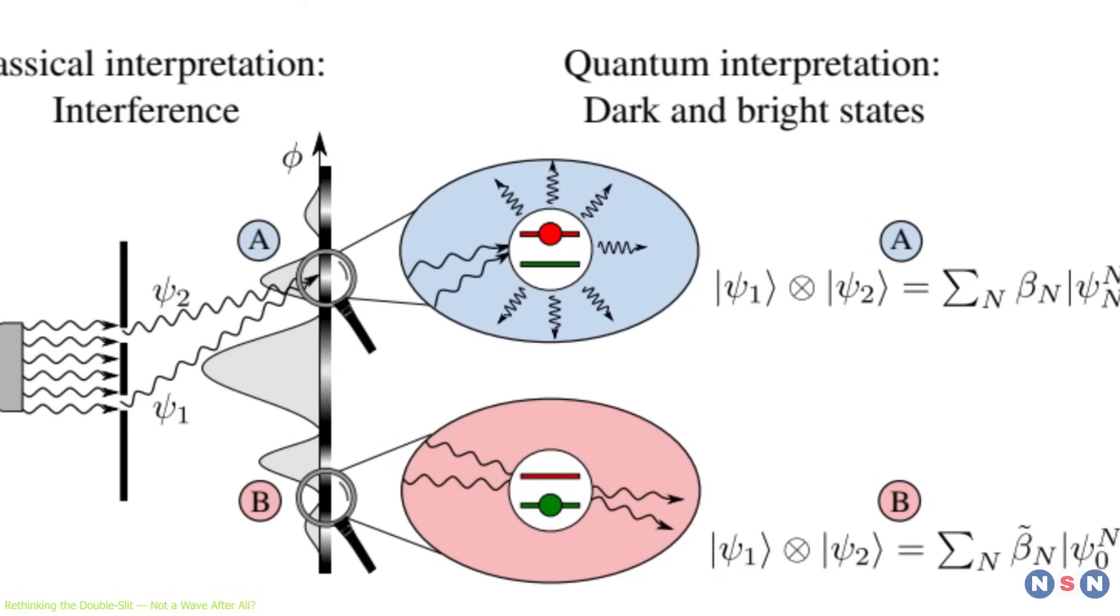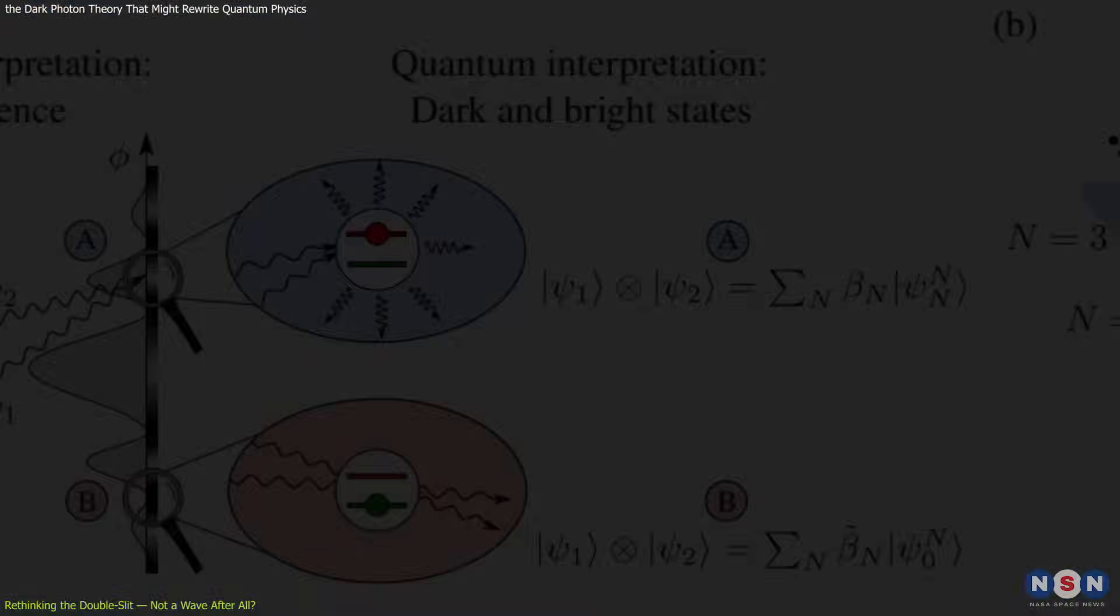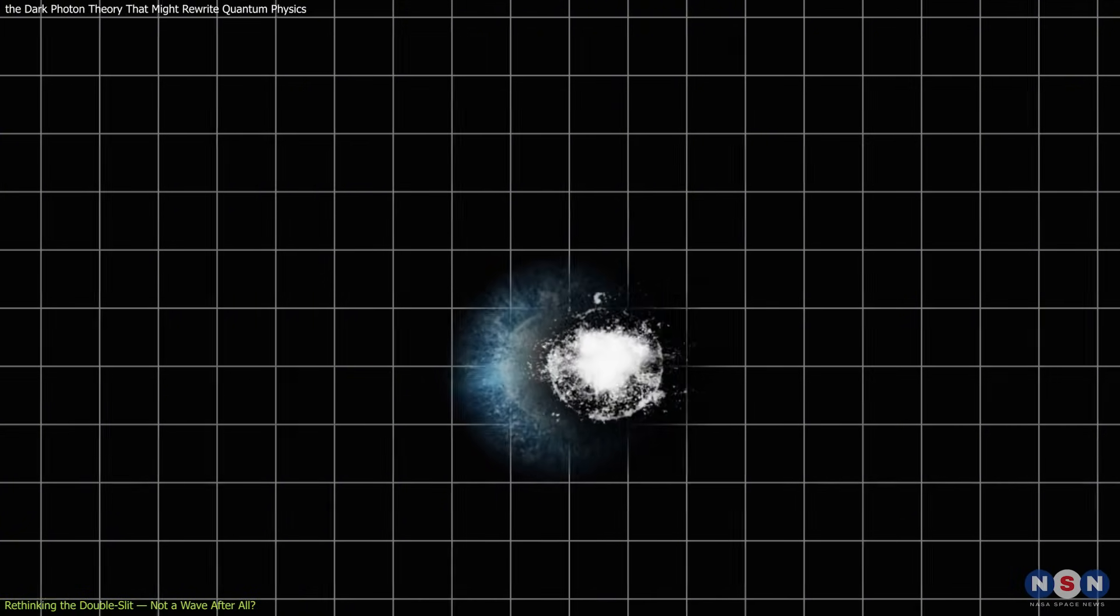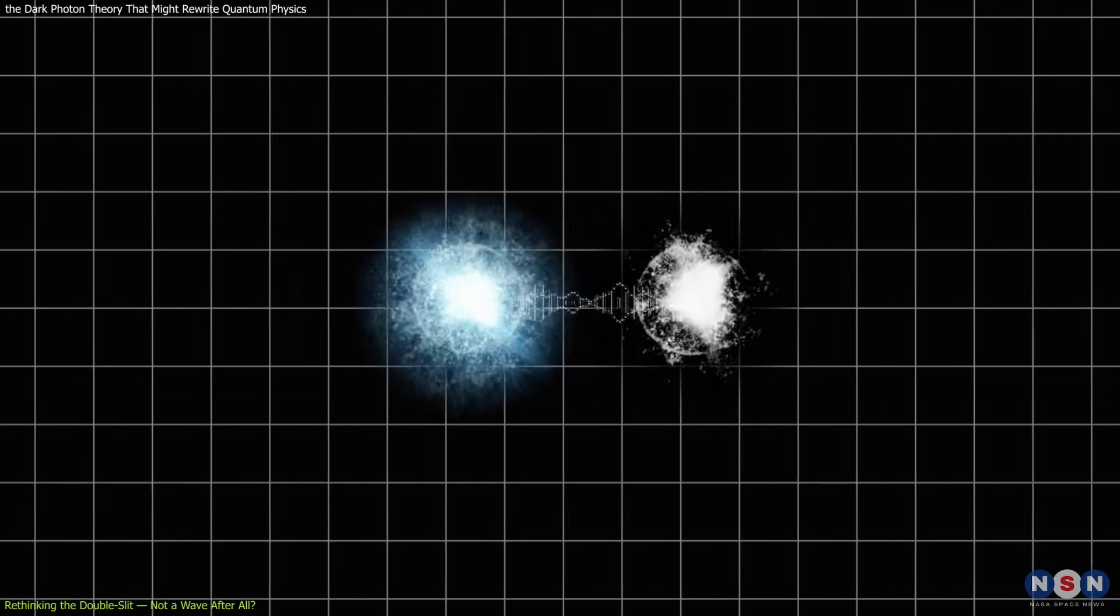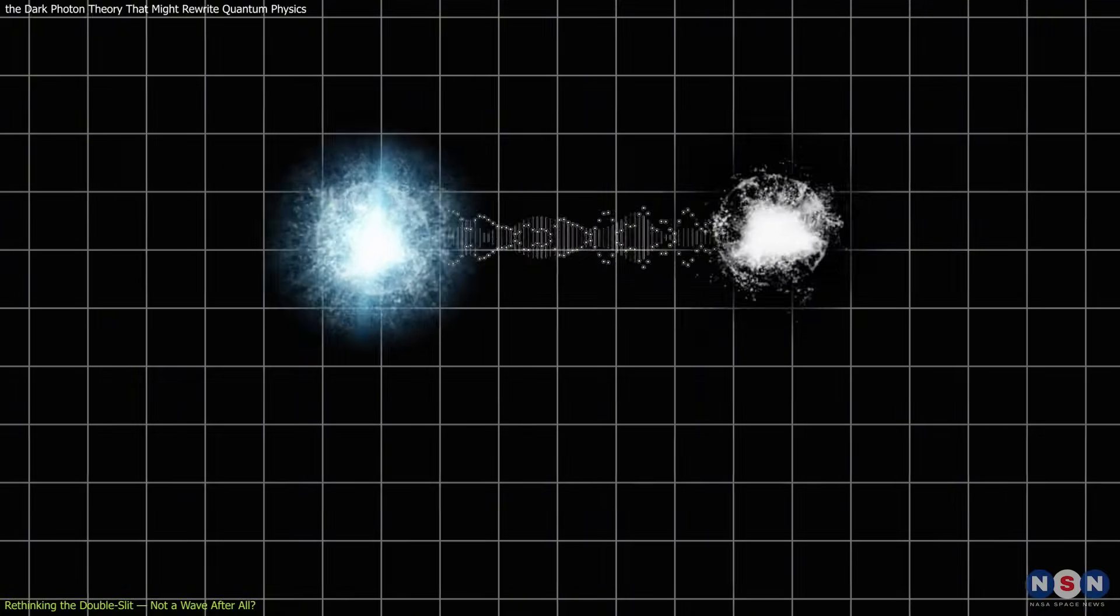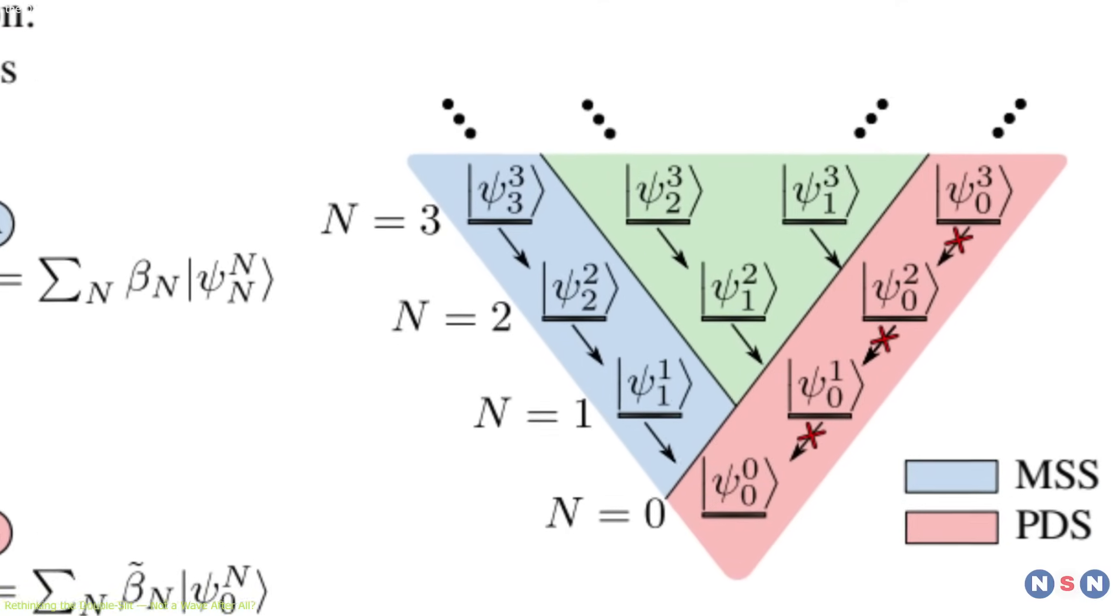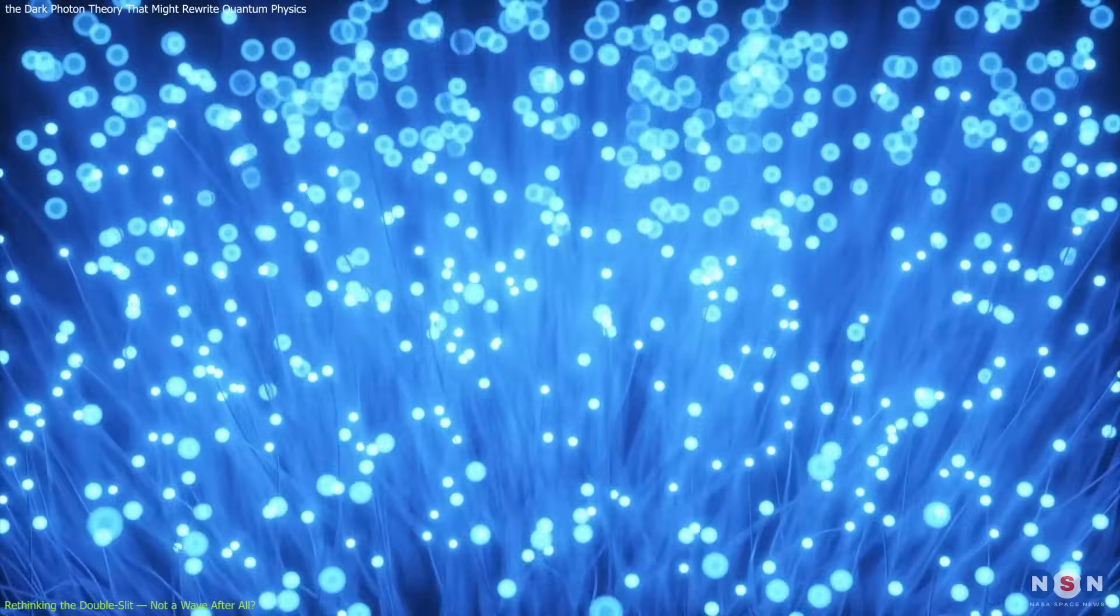This model deepens our previous understanding. The light's interference pattern isn't due to overlapping waves, but rather to entangled quantum states generating statistical detection patterns. And that's a profound shift in how we view measurement, probability, and the behavior of particles under observation.